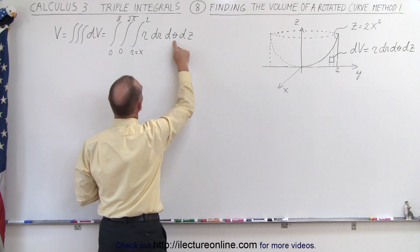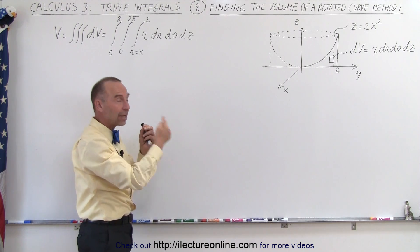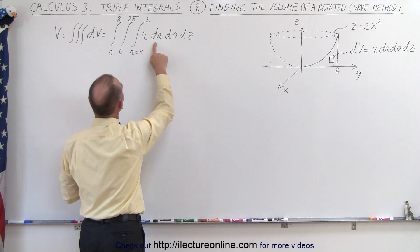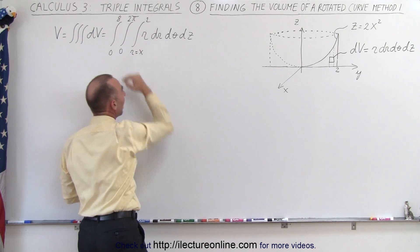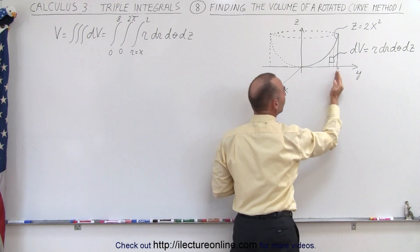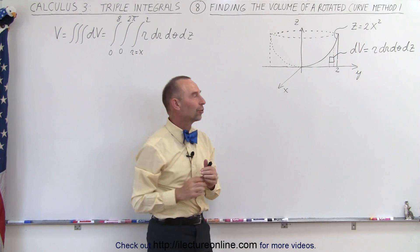Then we can also integrate over dθ which is all the way around, so that means that we have an angle of 2π. And then finally we integrate over dz from 0 to the top, and when x is equal to 2 at the edge, z will be equal to 8, so our integrals there will be from 0 to 8.